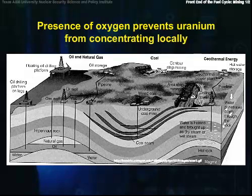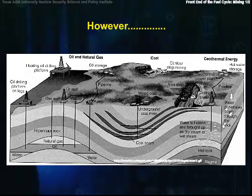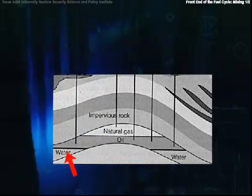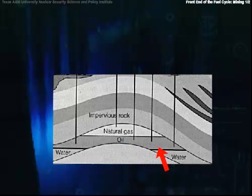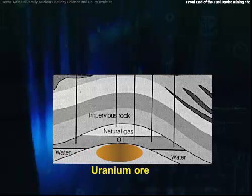Back on land, it's the chemistry of uranium that usually prevents it from concentrating locally — it's just too soluble in the presence of oxygen. However, geologic anomalies have occurred at a number of places around the world so that the concentration of uranium is sufficiently high that mining is economically feasible. These anomalies usually consist of places where oxygenated groundwater carrying uranium met with a reducing agent, such as petroleum deposits, buried wood, or peat. The uranium is reduced and the resulting compounds are insoluble and deposit at the reduction site. In the absence of oxygen, the deposits are geologically stable.